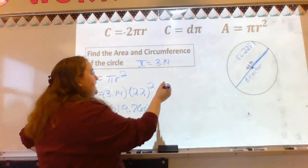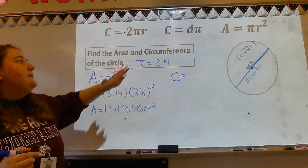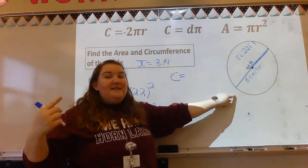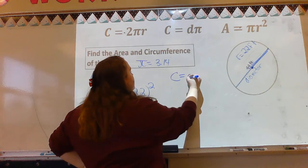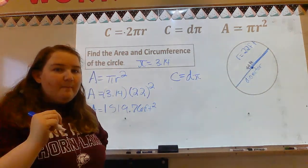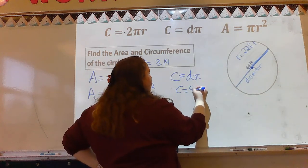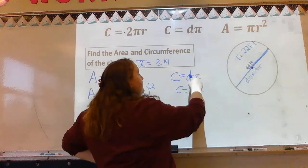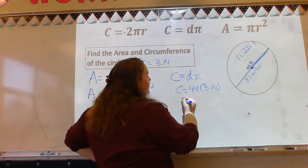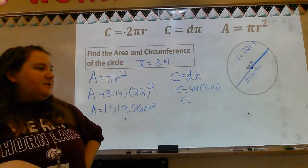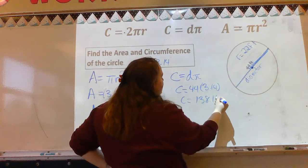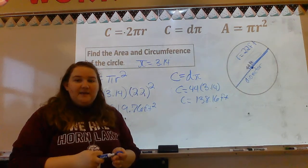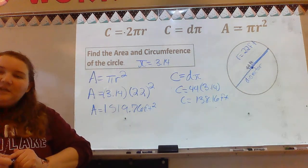Last part is C for circumference. I have two formulas — it doesn't matter which one you use — but in this situation, because they give me diameter, I'm going to use the one with diameter: C equals diameter times pi. So C equals 44 times pi. Pi is 3.14, so I'm substituting the symbol for 3.14. I put that in my calculator, multiply it out, and I get 138.16 feet. The distance around the circle is 138.16 feet. Be sure to reach out to your teachers if you have any questions, and I hope you have a great day.